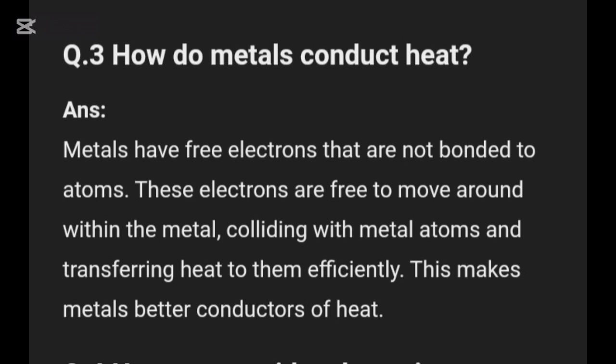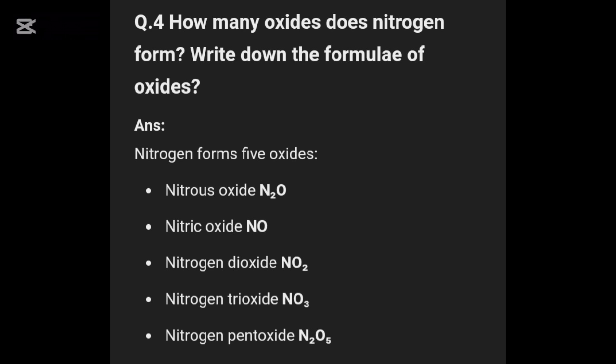Metals have free electrons that are not bonded to any atom. These electrons move freely within the metal, collide with other metal atoms, and transfer heat to them efficiently from one atom to another. This makes metals good conductors of heat.